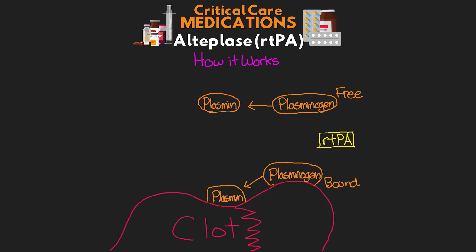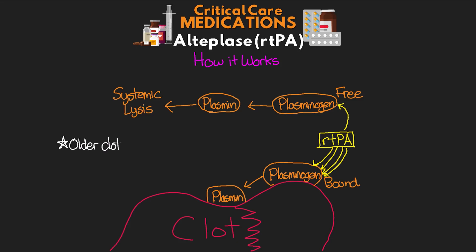rTPA is actually quite selective for the clot-bound plasminogen, but to some degree it can and does bind to free plasminogen, which produces free plasmin that can lead to systemic lysis. Another important point: the older the clot is, the more fibrin crosslinks there are, and the less effective TPA is going to be.